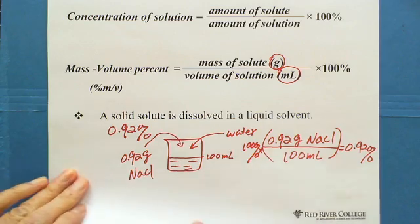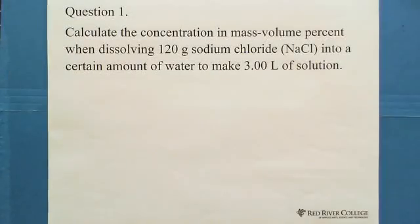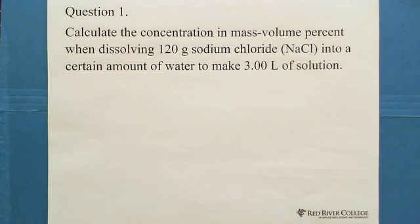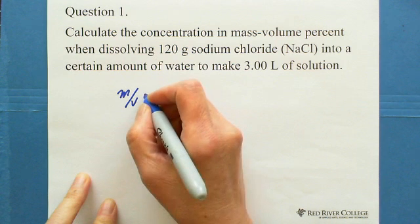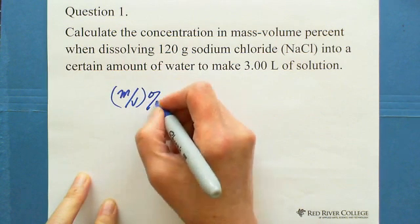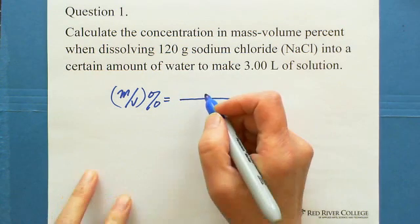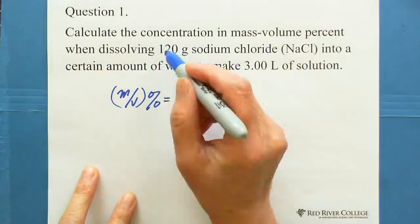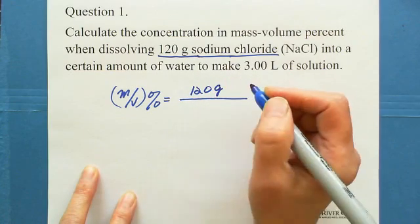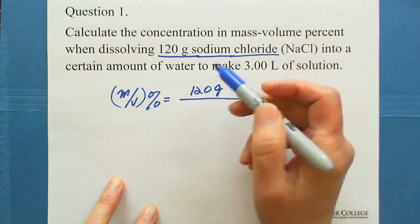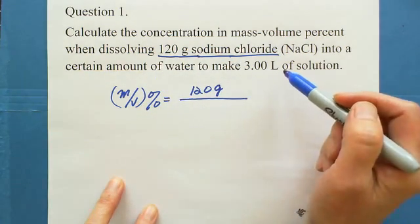Let's look at two questions. First question: calculate the concentration in mass volume percent when dissolving 120 grams of sodium chloride into a certain amount of water to make 3 liters of solution. Following the definition, we're looking for the concentration in mass volume percent. The numerator is the mass of solute, which is 120 grams of sodium chloride — already in grams.